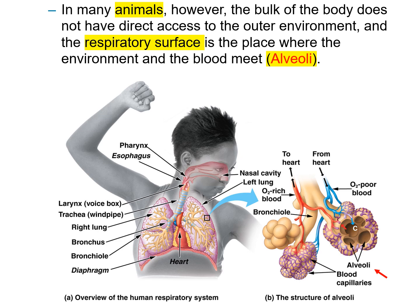Many animals are bigger than that. The bulk of the body does not have direct access to the outside environment. A human is super large in comparison to that flatworm, so gases can't just diffuse across our skin. We're going to have a different type of respiratory surface — our respiratory surface that exchanges gases with the outside environment is called the alveoli.